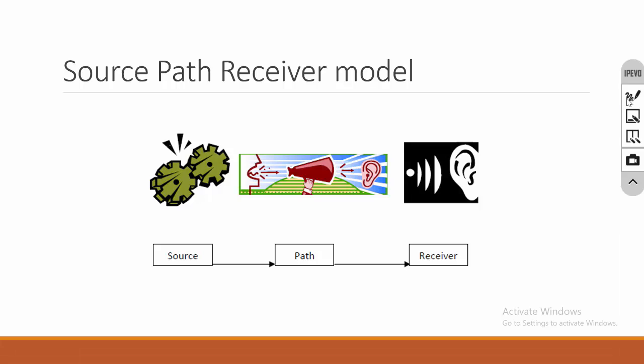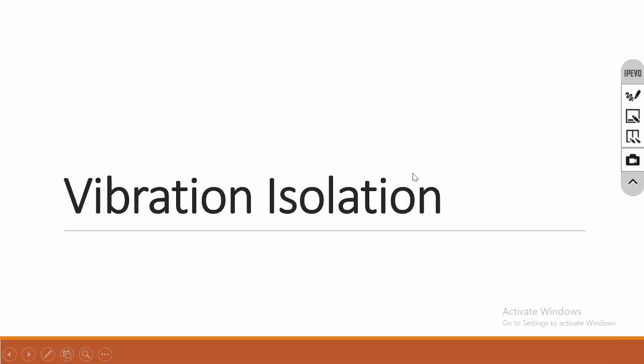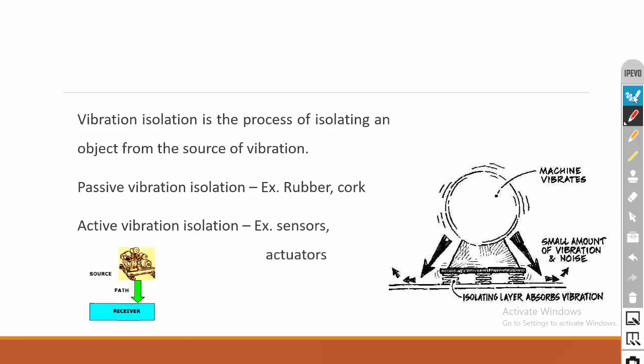First we will start with vibration isolation. Vibration isolation is the process of isolating the vibrating object from the receiver. For example, if a machine is vibrating, I am going to isolate the machine from the floor. If an engine is vibrating, I am going to isolate the engine from the chassis. Isolation means using some isolator pads.